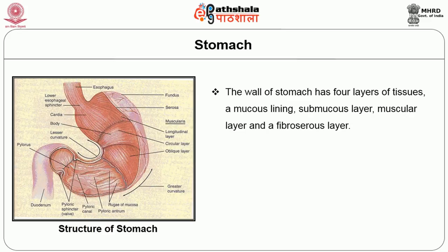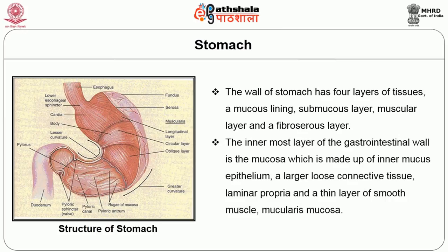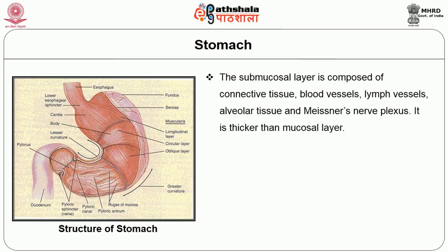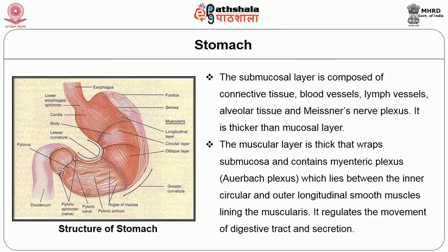The wall of the stomach has four layers of tissue: a mucous lining, a submucous layer, a muscular layer, and a fibroserous layer. The innermost layer, the mucosa, is made up of a linear mucus epithelium, a loose connective tissue called the lamina propria, and a thin layer of smooth muscles called the muscularis mucosa. The submucosal layer is composed of connective tissues, blood vessels, lymph vessels, alveolar tissues, and the Meissner's nerve plexus. The muscular layer, which is thicker, wraps the submucosa and contains the myenteric plexus lying between the inner circular and outer longitudinal smooth muscles of the muscularis, regulating movement and secretion of the digestive tract.